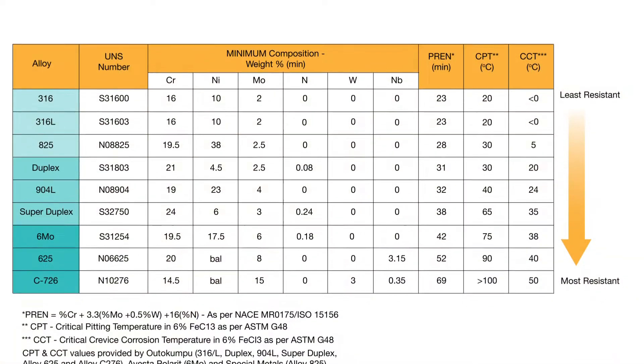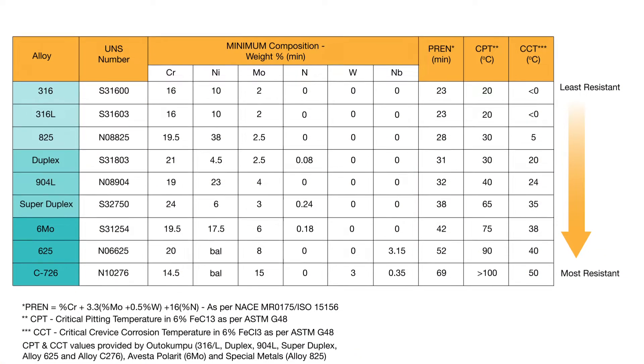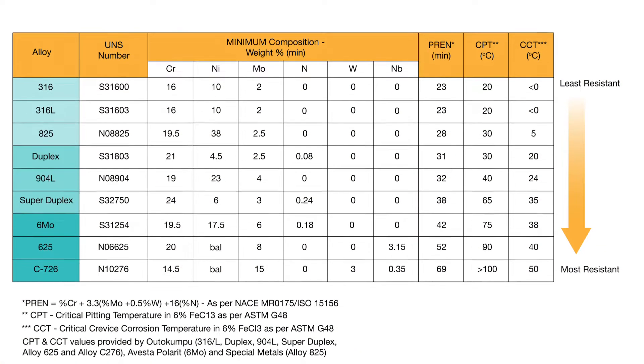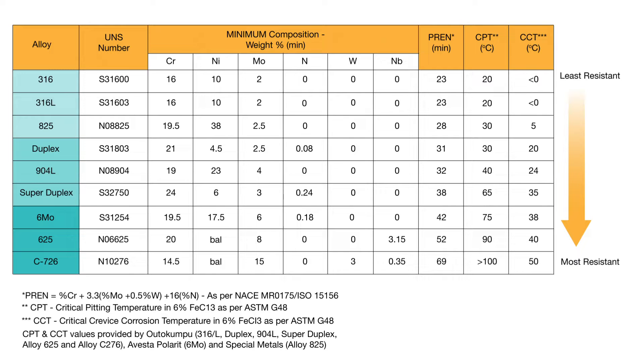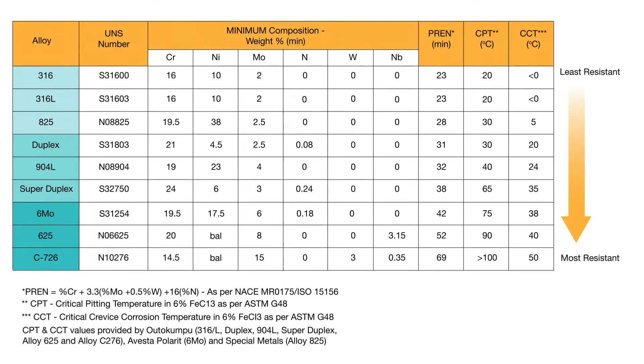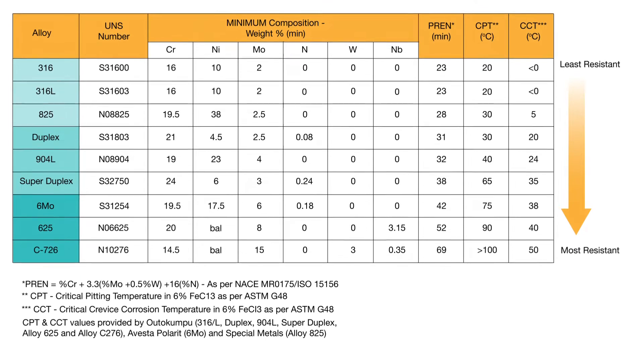PREN is a corrosion resistance indicator — a very useful value for engineers to compare and rank different alloys and select the right material for a given application.